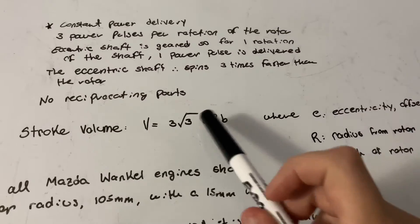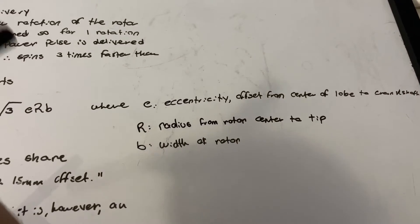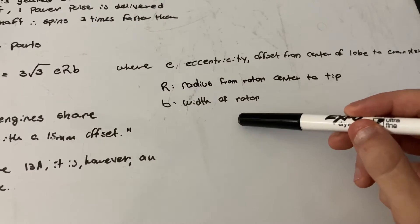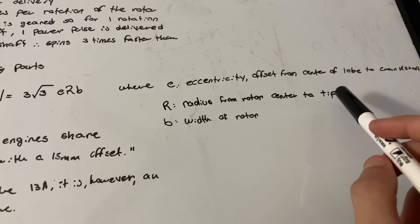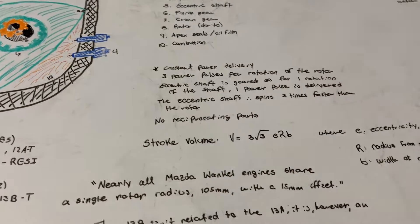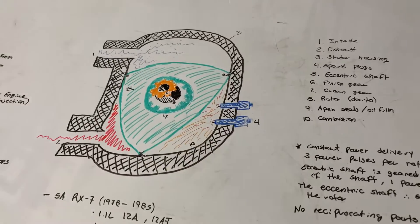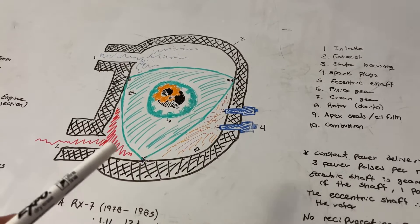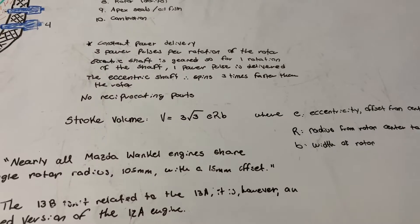The formula is: V = 3√3 × e × r × b, where e is eccentricity — the offset from the center lobe to the crankshaft — r is the radius from the center of the rotor to the tip, and b is just the width of the rotor. These rotors are pretty thick and hefty. Since there's no reciprocating mass, these engines don't lose as much power to friction compared to a traditional piston engine.